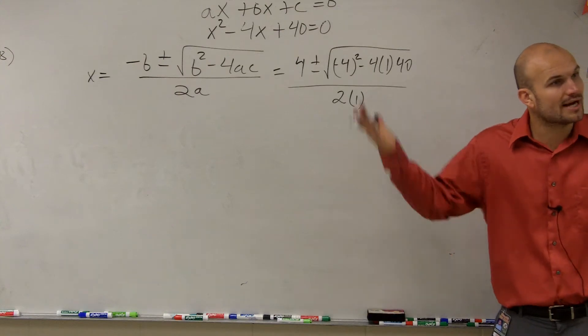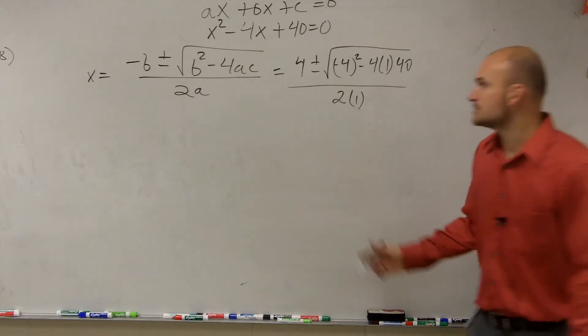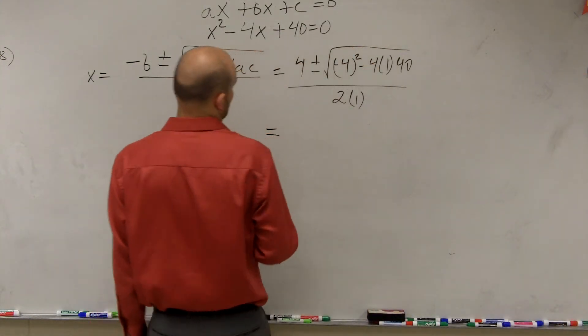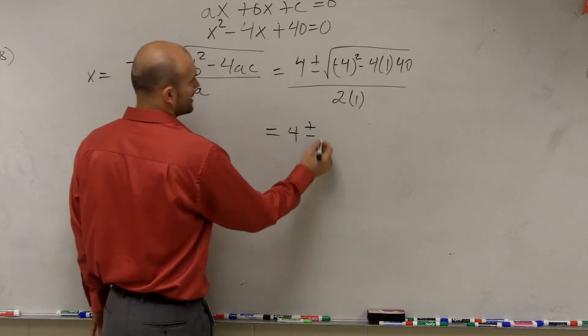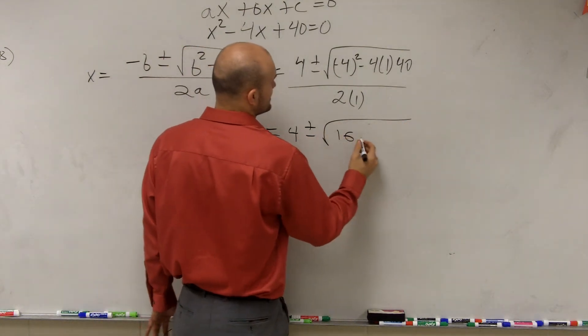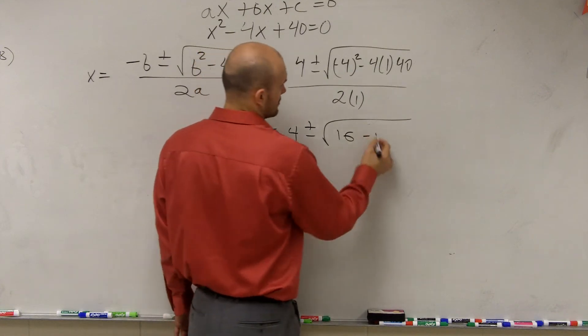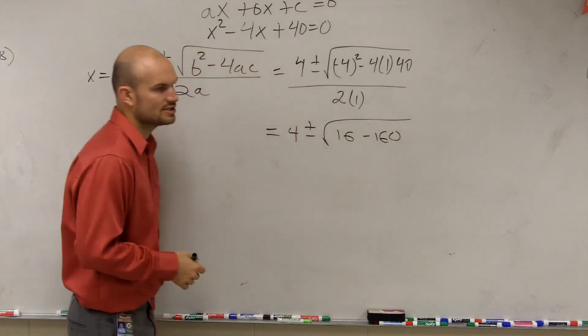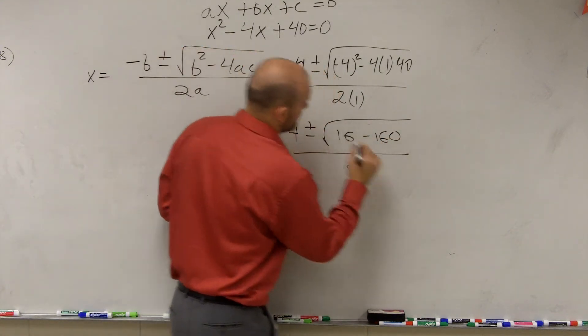We can't factor it, so we've got to use the quadratic formula. So therefore, we have 4 plus or minus the square root of 16 minus 160 divided by 2.